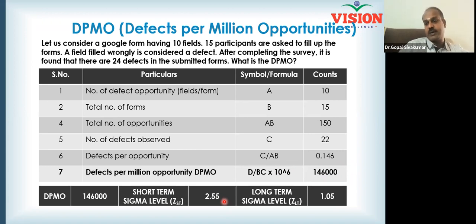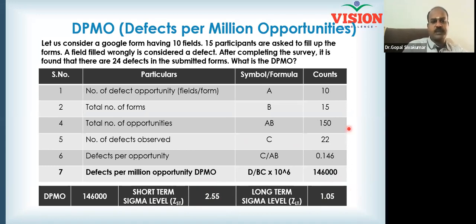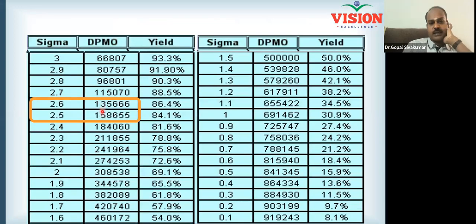If you are learning about Six Sigma, you will have to repeat and repeat. The short term sigma level and long term sigma level differ by 1.5. So 2.55 short term gives 1.05 long term sigma level. If you see the success rate in this range, the success rate will be 84% or 86%.